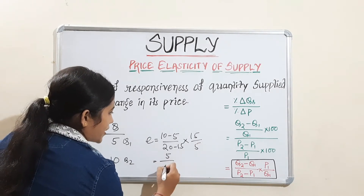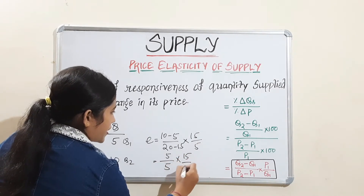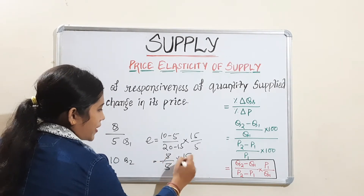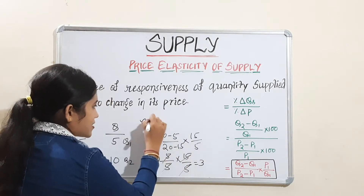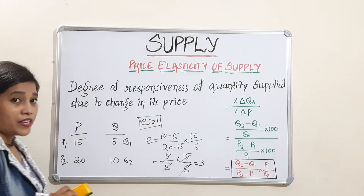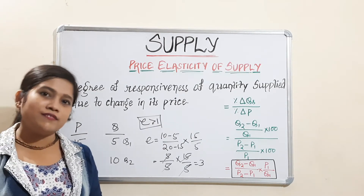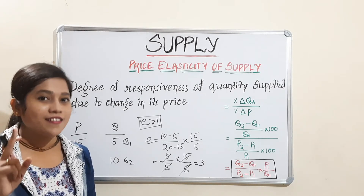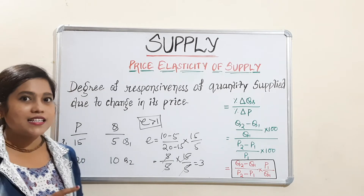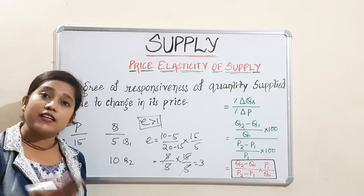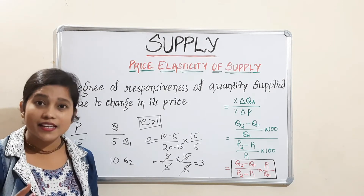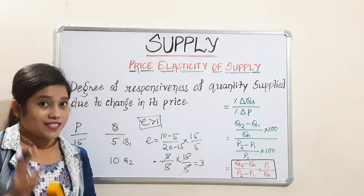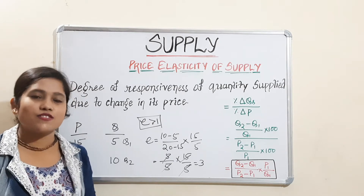So that gives us 5 divided by 5, multiplied by 15 divided by 5. The 5s cancel, giving 15 divided by 5, which equals 3. Your elasticity is greater than 1. When elasticity is greater than 1, it is relatively elastic. I have discussed already in which case it will be relatively elastic, relatively inelastic, or unitary elastic — go to that video if you have any doubt.